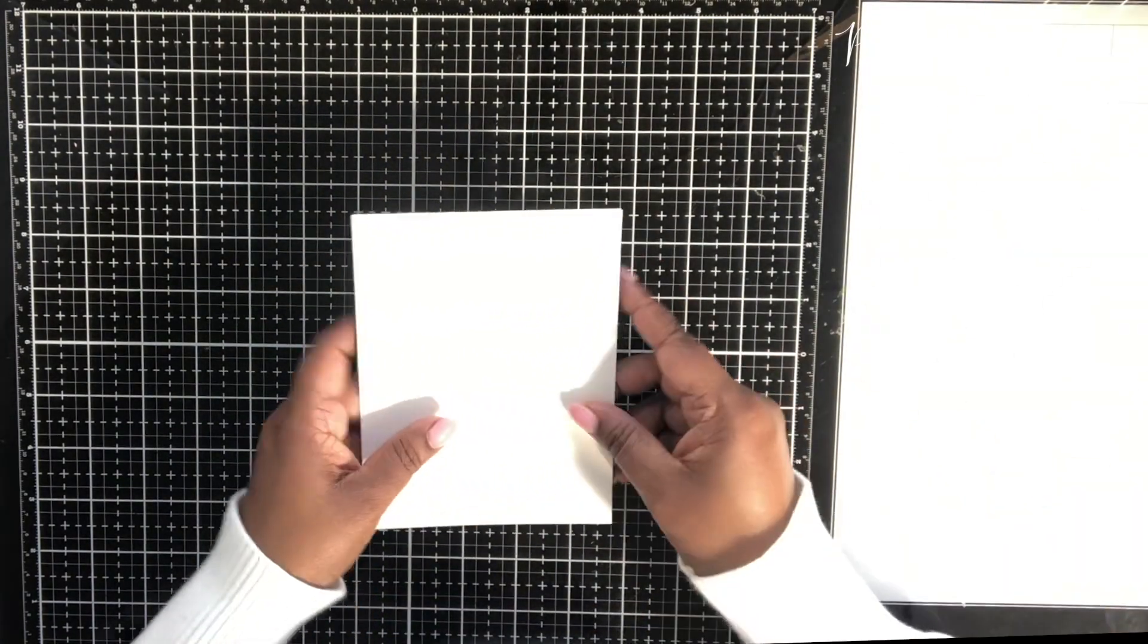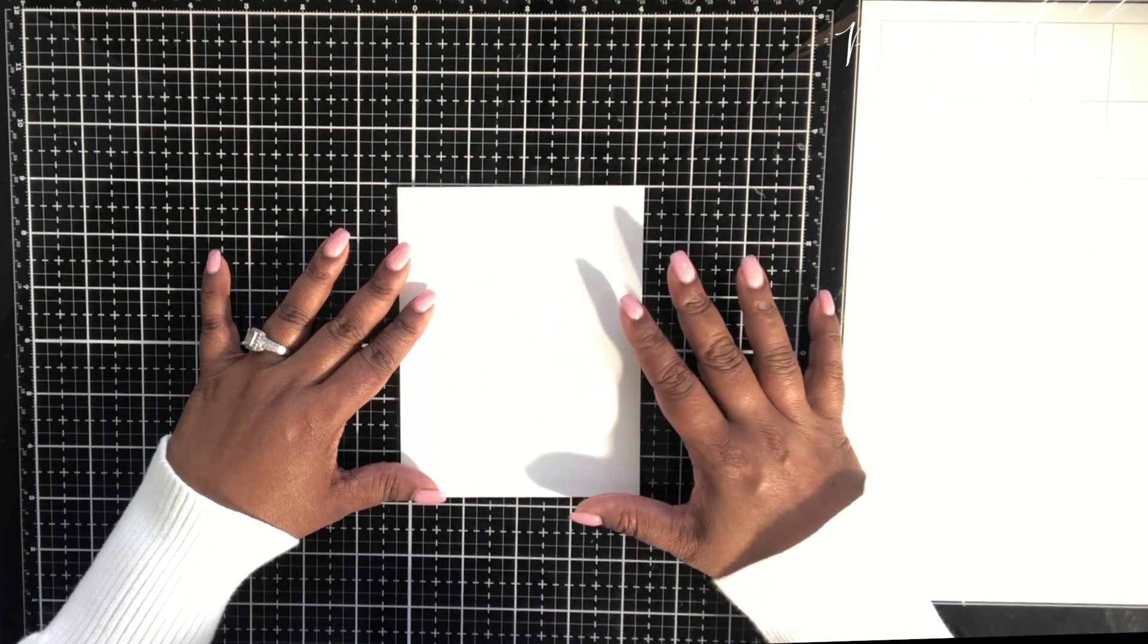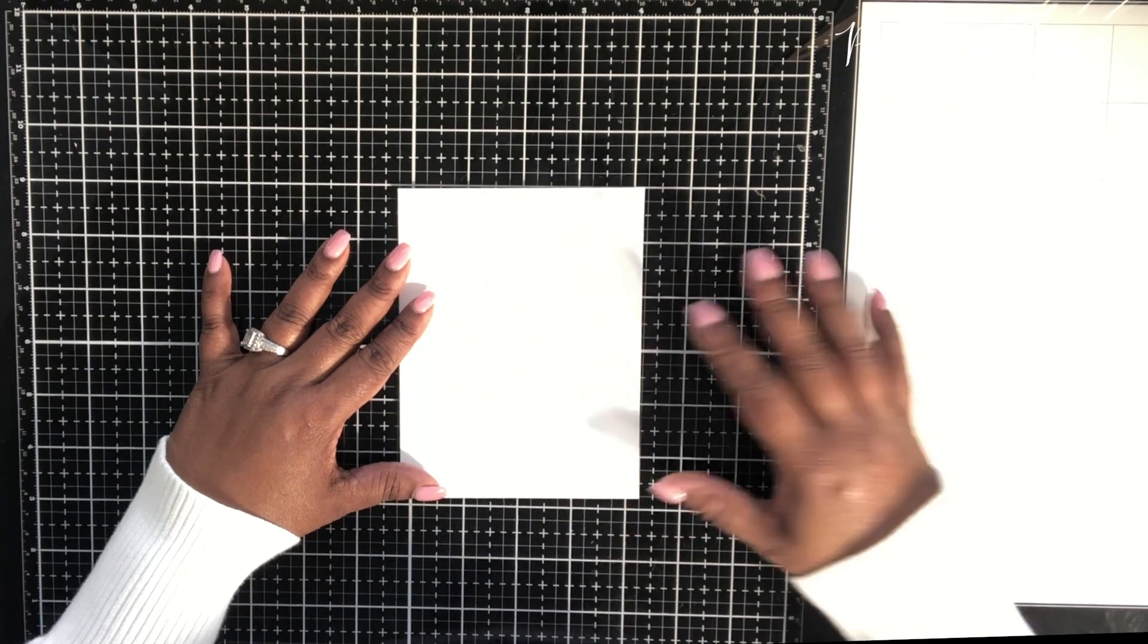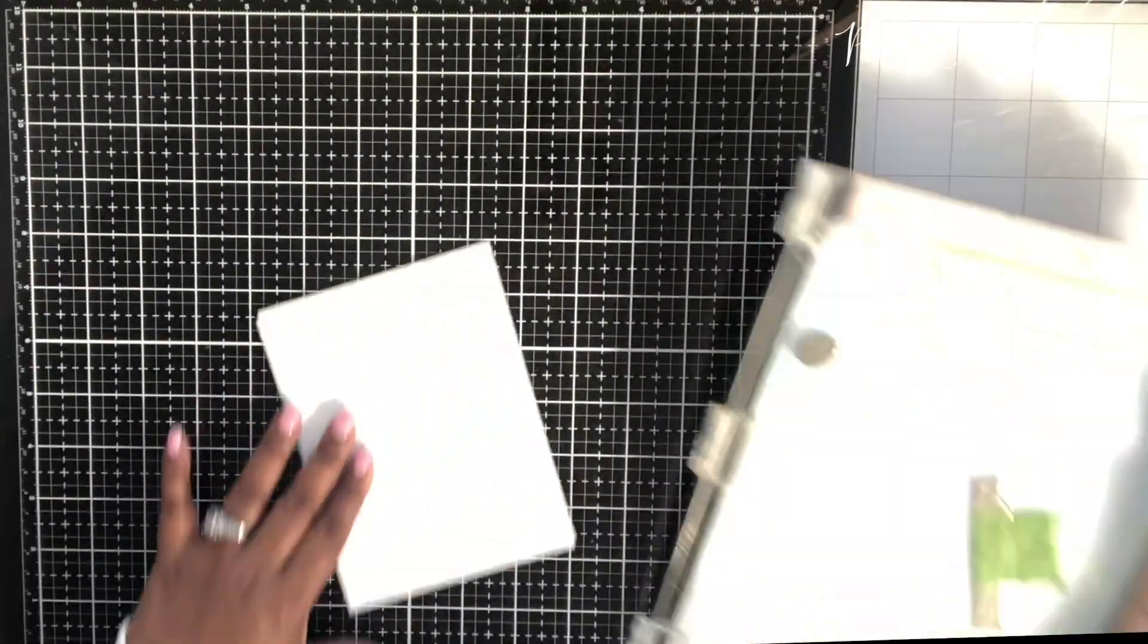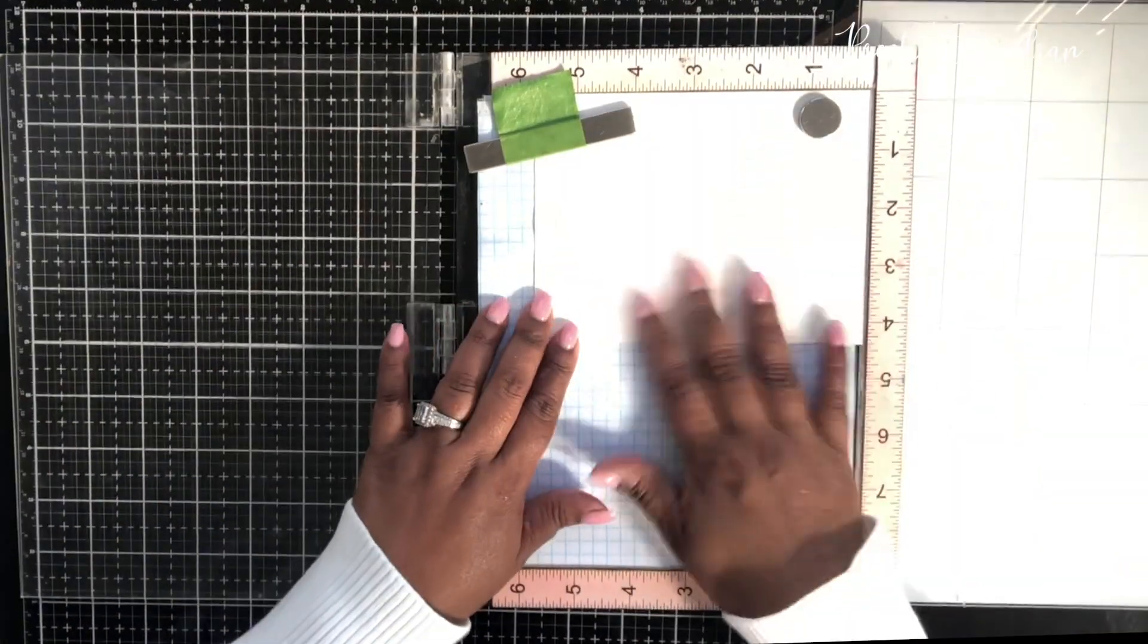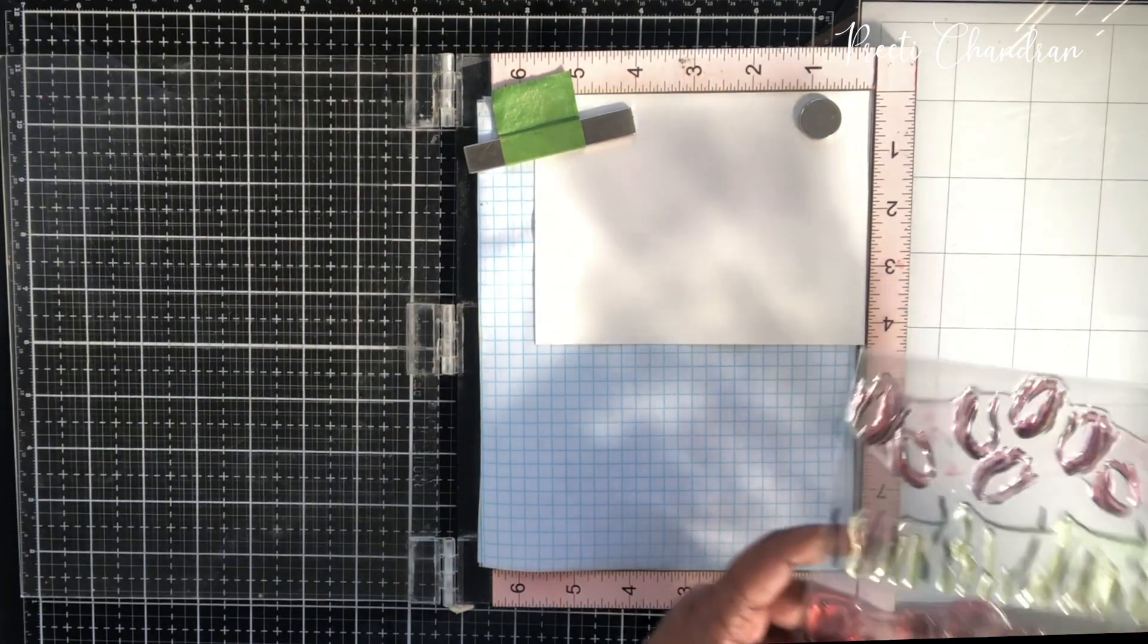I'm starting off with hot press watercolor paper. The only reason I chose this paper is because it's a smoother paper compared to other watercolor papers. You can always use any other watercolor paper that you would have in your stash.